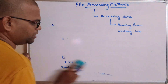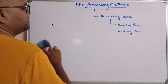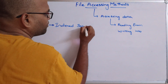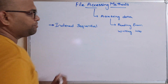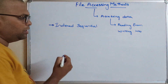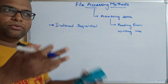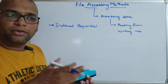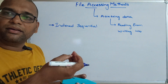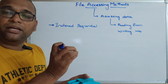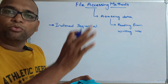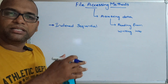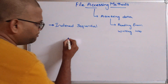The third category is indexed sequential access, which is an extension of sequential access. The name indicates that for every block there will be an index. This is similar to a textbook — we find the index at the beginning and can easily locate the chapter we want by going directly to that page number. The index page contains chapter names and page numbers.